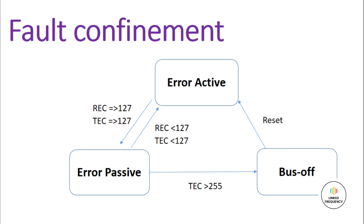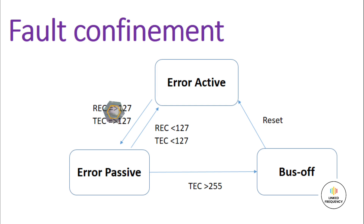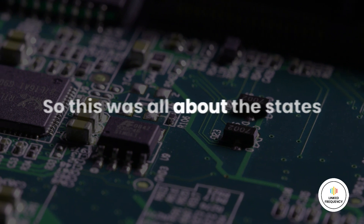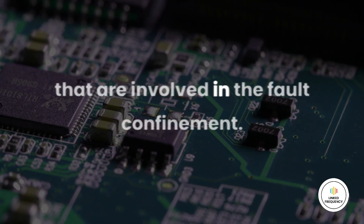In the bus-off state, the node cannot transmit or receive messages on the bus until the issue is resolved and the node is reset or re-initialized. In order to reconnect back to the network, a recovery sequence has to be executed. This involves re-initialization and configuration of the CAN controller by the host system. After re-initialization, it will wait for 128 × 11 recessive byte times before it commences communication again.